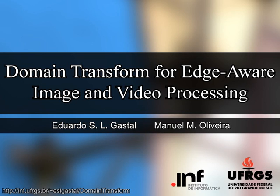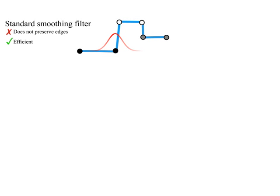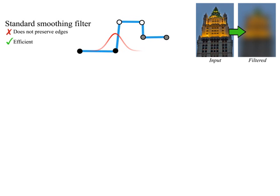We present a new approach for efficiently performing edge-aware filtering of images and videos in real time. Image filtering is a fundamental operation in computer graphics and related fields. Standard space-variant smoothing filters average samples based on their distance in the spatial domain. These filters are efficient but do not manage to preserve edges, and smooth all of the image content.